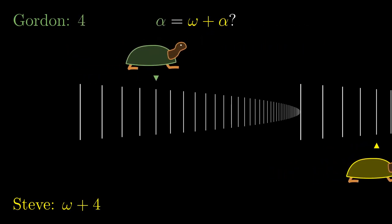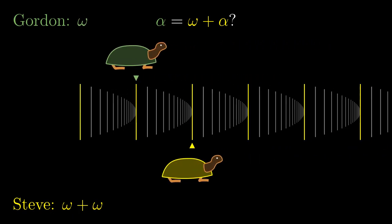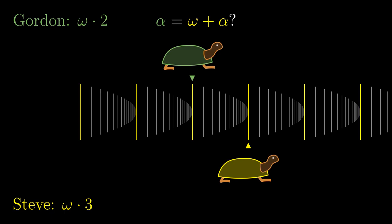When Gordon gets to omega, Steve is already gone at index omega plus omega. We denote it simply as omega times 2. When Gordon gets to index omega times 2, Steve is at omega times 3. You can pause the video and think about it. Will Gordon manage to catch Steve?